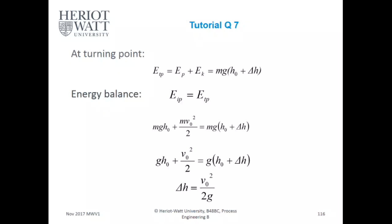And then you have your drop. mgh0, plus mv0 squared over 2 equals mg, multiplied by h0, plus delta h. Hence, if you cancel out, your delta h equals v0 squared over 2g.